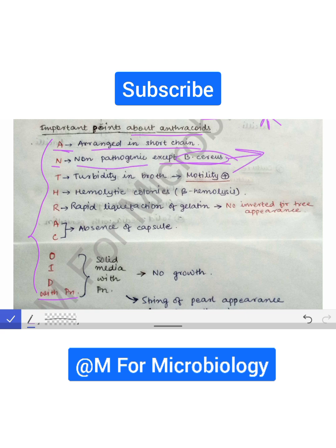What is the meaning of T? T means it produces turbidity in broth. If any bacteria produces turbidity in broth, that means motility is present in that bacteria. And if motility is present, that means it has flagella.